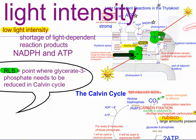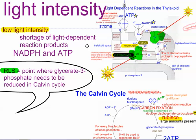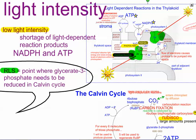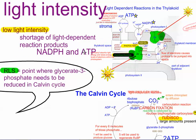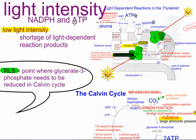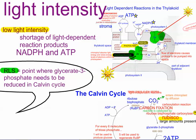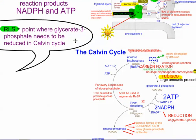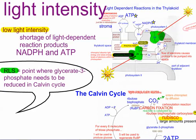Let's look at light intensity. If light intensity is the problem, the light-dependent reactions are affected. With not enough light, you don't get electrons excited, protons flowing, ATP produced, or NADPH produced. So with lack of light, you end up with insufficient NADPH and ATP. The rate limiting step, however, is where this stuff is actually needed — which is in the Calvin cycle, specifically where NADPH and ATP are used to convert glycerate-3-phosphate (GP) into triose phosphate (TP).